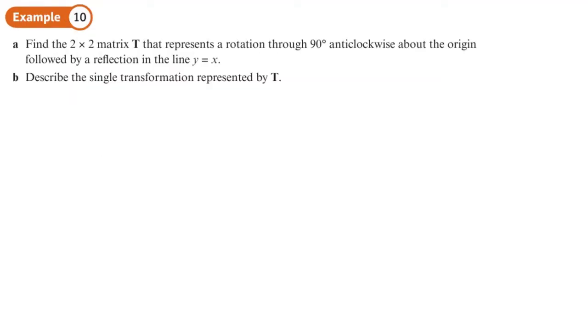Okay, so on this one, we're going to find a 2 by 2 matrix T that represents, first of all, a rotation through 90 degrees, anti-clockwise, about the origin, followed by a reflection in the line Y equals X. I'm going to quickly work out what these two matrices are. So let's start off with the rotation matrix.